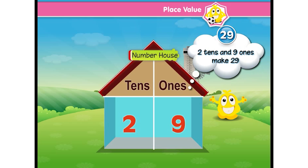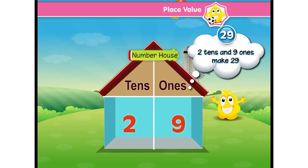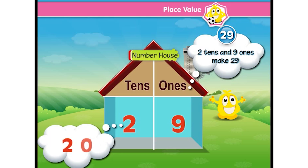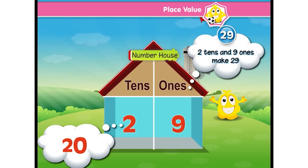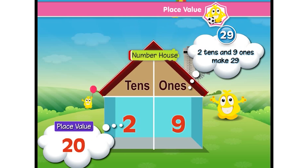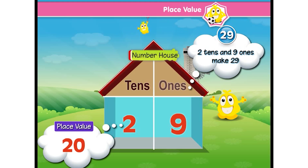Now see how to decide place value. The number in the tens place always needs one company — it needs a friend, and zero is the best friend. So zero is added to the number to describe its place value.